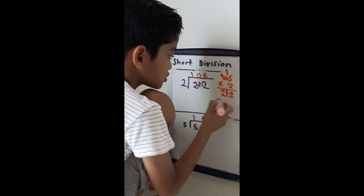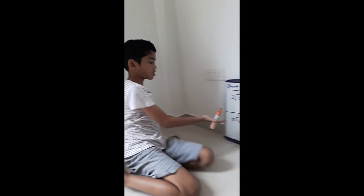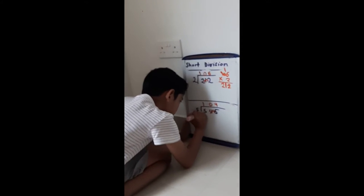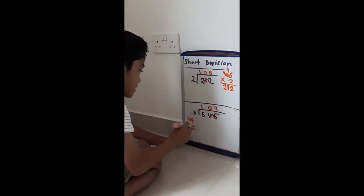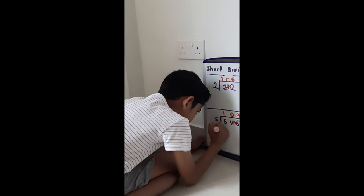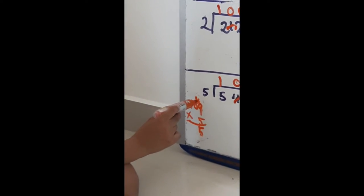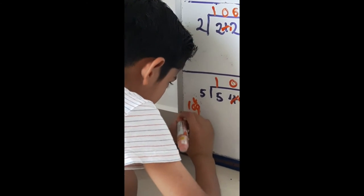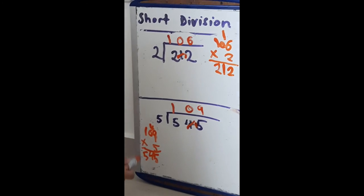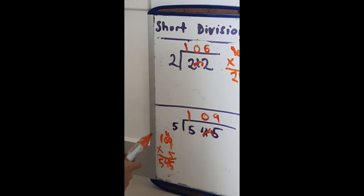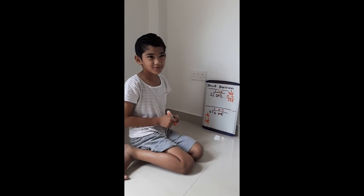That gives us 212, so 106 is the right answer. Now let's check the second one: 109 times 5. 9 times 5 is 45, so put the tens here and the units down. That gives us 545, so 109 is the right answer. That is the end of our video — thank you so much for watching!